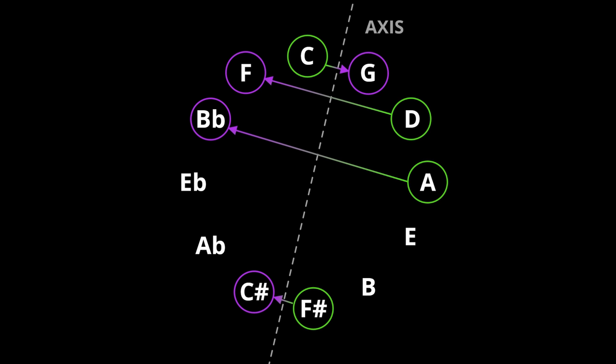Entire chords can be reflected along a key center. Just reflect each note in the chord individually, like before. Just like every note has a negative equivalent in a given key center, so too does every chord. The negative equivalent of a major chord built on the tonic is a minor chord.